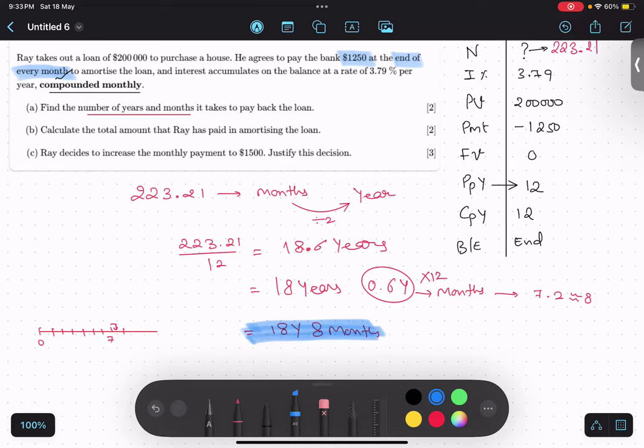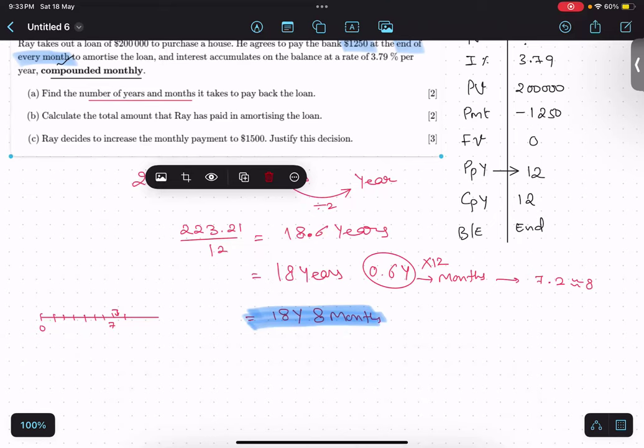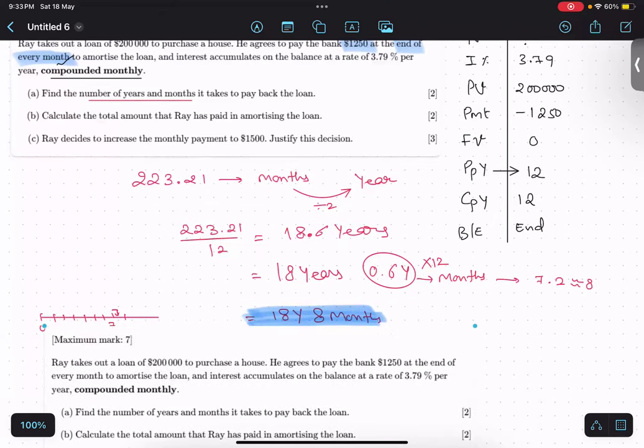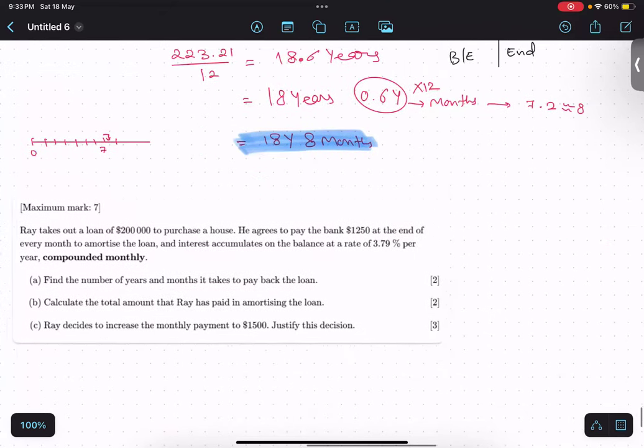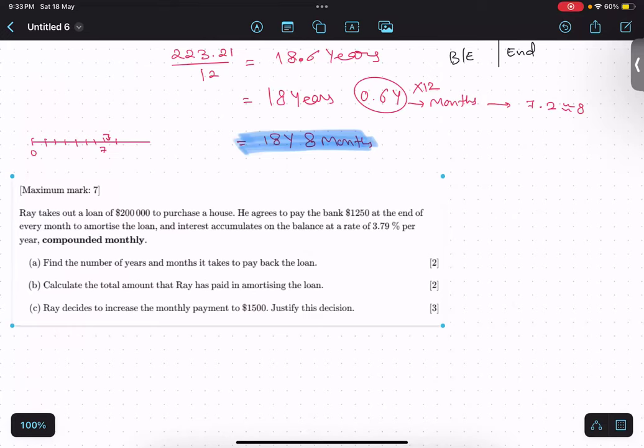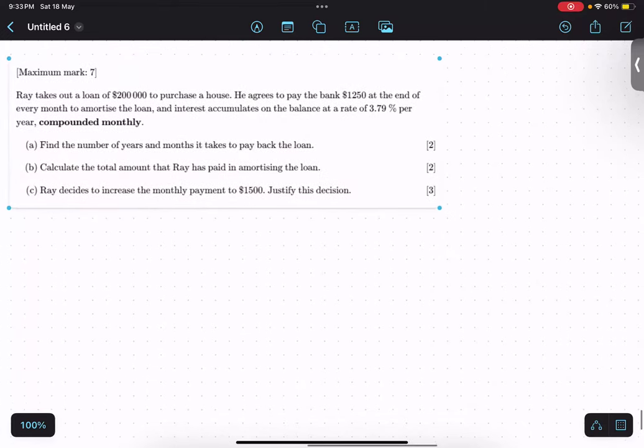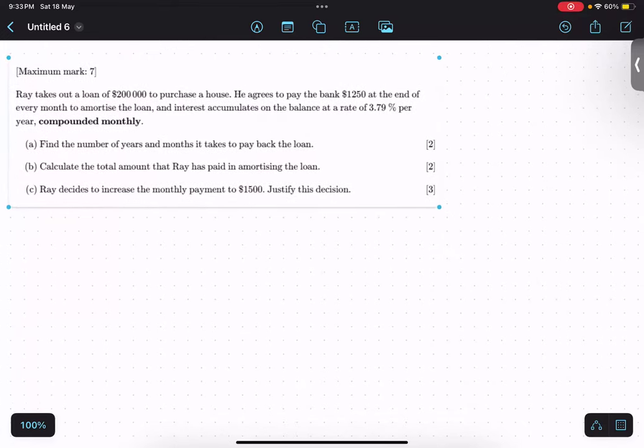Is that why we are rounding up? Yeah. Okay. Moving on to the B part. Let me just copy this thing. B part. Calculate the amount. Total amount that Ray has paid in amortizing the loan.